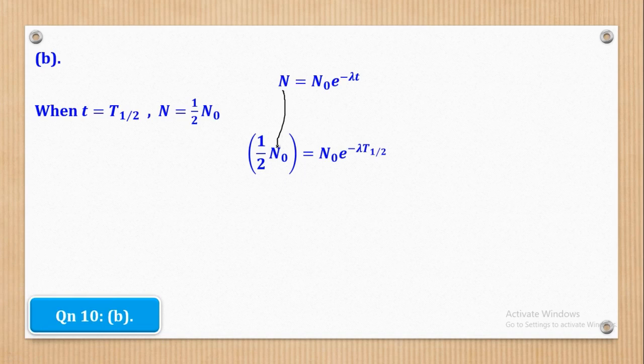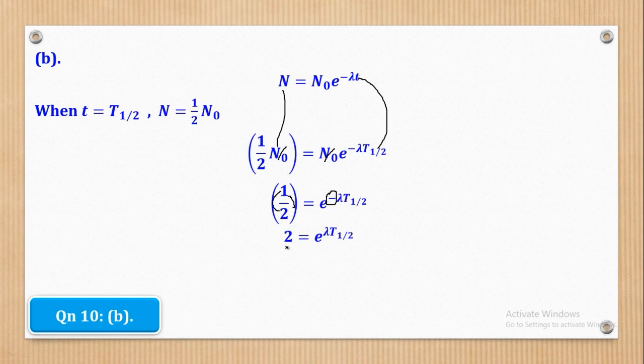So where there is n, I've put there a half n0 to come up with this. And where there is t, I've put there t-half to come up with that. And when I simplify, this n0 and this n0 will cancel. So it will come up with a half being equal to e raised the power negative lambda t-half. Now from there, when I rearrange, this negative can become positive by making this the reciprocal. So when I do that, I'll come up with 2 equal to e raised the power lambda t-half.